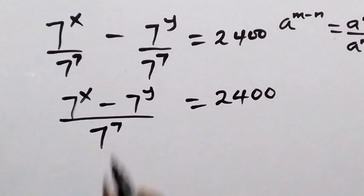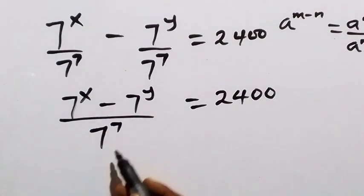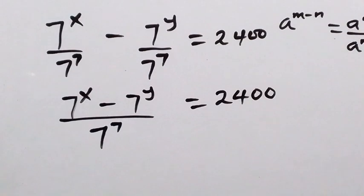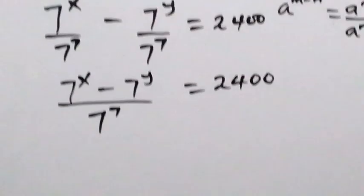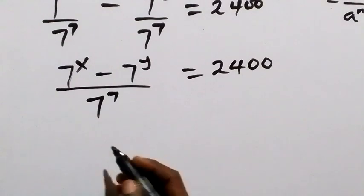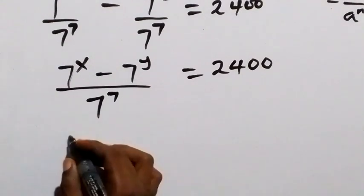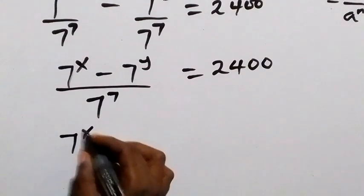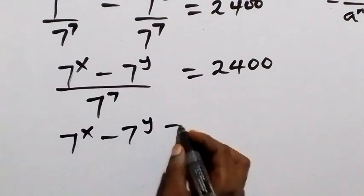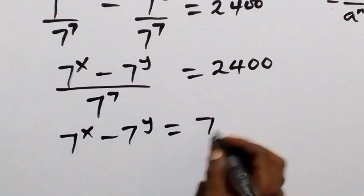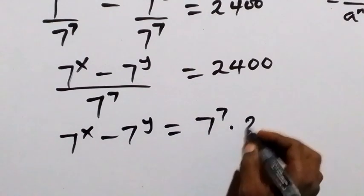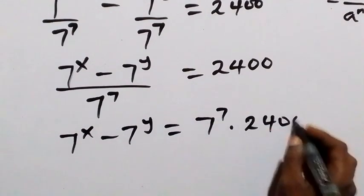Then in the next step, we remove the 7 raised to power 7 by multiplying both sides by 7 raised to power 7, or equivalently, we cross multiply. So we have 7 raised to power x minus 7 raised to power y now equals 7 raised to power 7 multiplied by 2400.